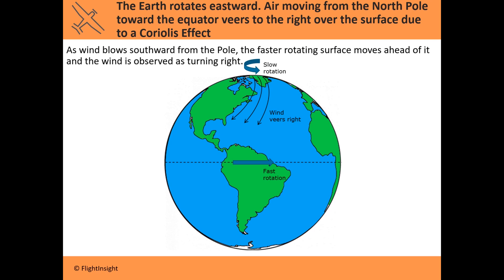It's going to appear as if that wind is veering to the right — the faster rotating surface moves ahead as the wind blows behind it. So any wind that's initiated is going to have a rightward veer in the Northern Hemisphere and a leftward veer in the Southern Hemisphere. This is the FAA private pilot course — we're in the United States, so we'll only talk about the Coriolis effect from the perspective of the Northern Hemisphere.